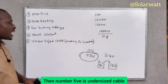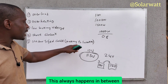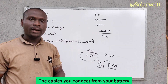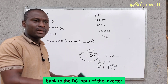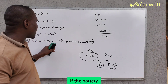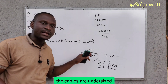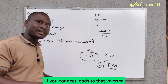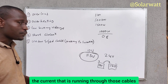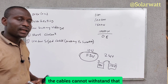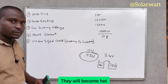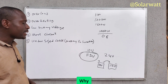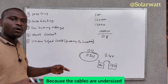Number five is undersized cable. This typically happens between the inverter and the battery bank — the cables connecting the battery bank to the DC input of the inverter. If those cables are undersized, the inverter will always be shutting down. When loads are connected, the current flowing through the cables exceeds what they can withstand, causing them to become hot. The inverter senses this and keeps shutting down because the cables are undersized.